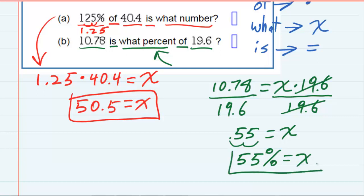So for the second question, 10.78 is 55% of 19.6.